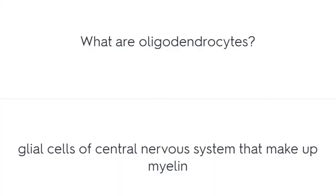What are oligodendrocytes? Glial cells of the central nervous system that make up myelin.